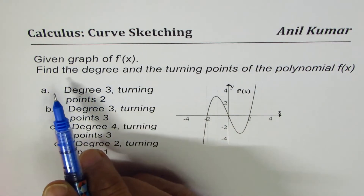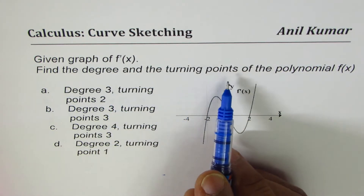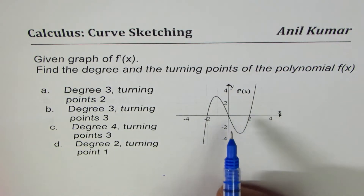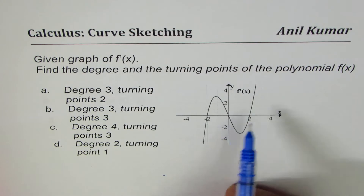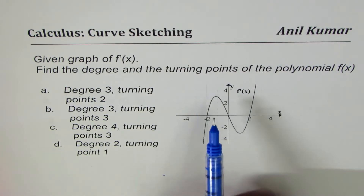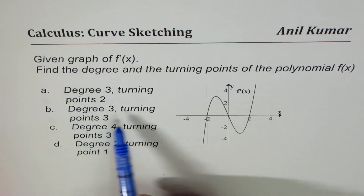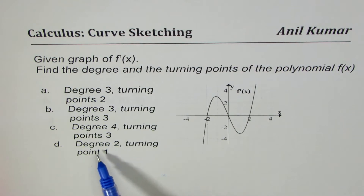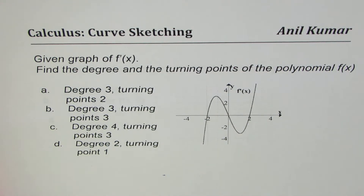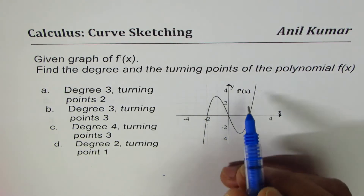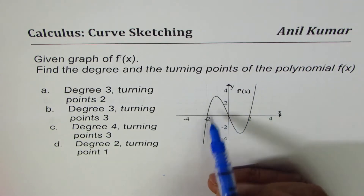Here is the first multiple choice question: given the graph of f'(x), that means the derivative of the function, find the degree and the turning points of the polynomial f(x). So we have a graph of the derivative of a polynomial and we need to find the degree of the polynomial itself along with the number of turning points. The choices are: degree 3 turning points 2, degree 3 turning points 3, degree 4 turning points 3, or degree 2 turning points 1. You can pause the video and answer the question, then look into my suggestions.